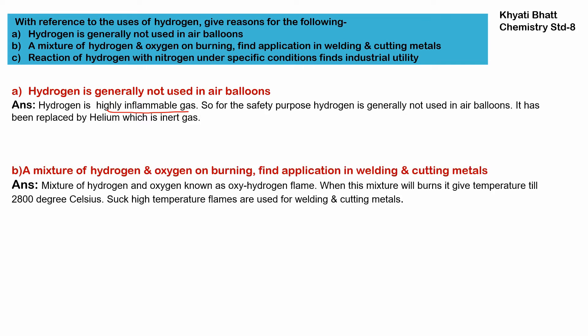Second, a mixture of hydrogen and oxygen on burning finds application in welding and in cutting metal. In welding and cutting metal, we require very, very high temperature. When we mix hydrogen and oxygen, it generates an oxyhydrogen flame, and this flame can reach up to 2800 degrees Celsius. So we can use this high temperature for welding and cutting metal.